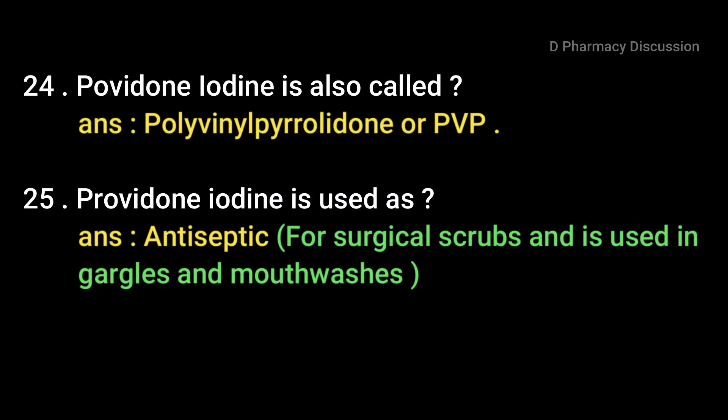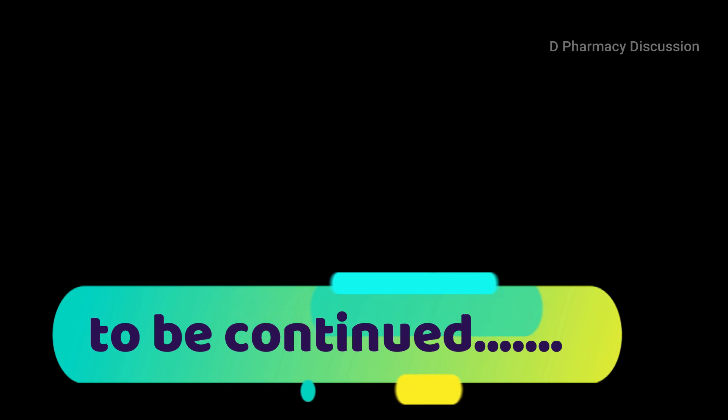Povidone iodine is also called polyvinylpyrrolidone or PVP. Povidone iodine is used as an antiseptic — it may be used as a surgical scrub or in gargles and mouthwashes.